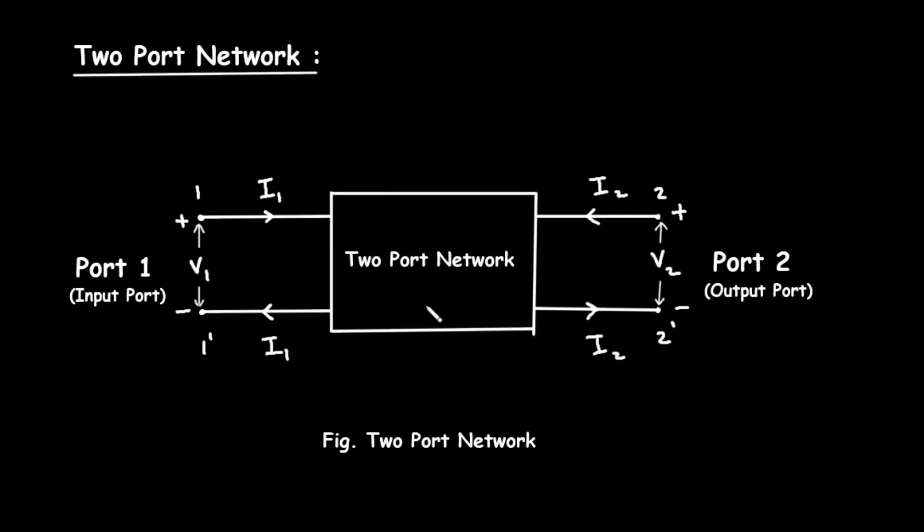Imagine a black box that has 2 wires on the left side, this is the input side, we call it port number 1, and 2 wires on the right side, we call it output port. This is port number 2. You send electricity into port number 1 and get electricity from port number 2.